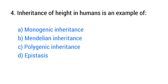Question number 4. Inheritance of height in humans is an example of? The right answer is option C: Polygenic inheritance.